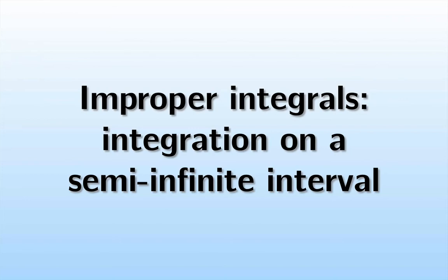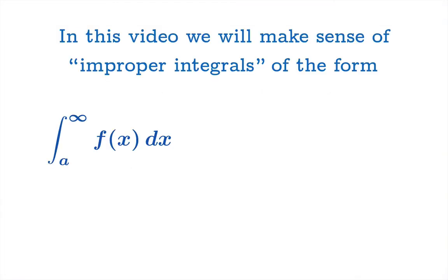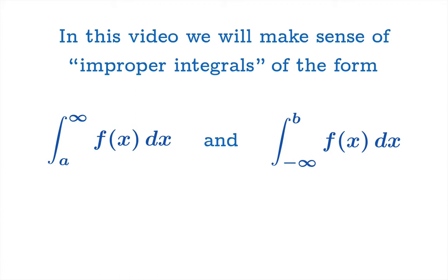In this video we're going to look at improper integrals. In particular, we're going to look at a special kind of integral where we attempt a definite integration on a semi-infinite interval. We will make sense of so-called improper integrals of the form integral from a to infinity of a function, and the integral from negative infinity to b — semi-infinite intervals with a fixed endpoint on one side and the other running off to positive or negative infinity.